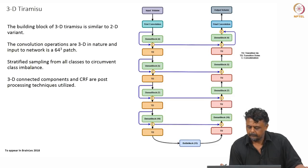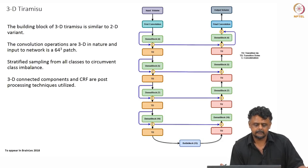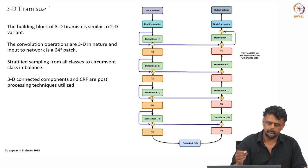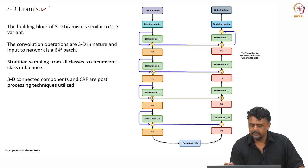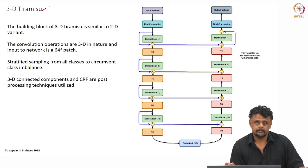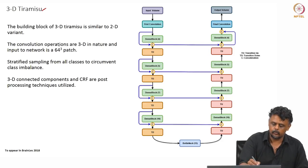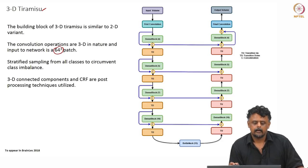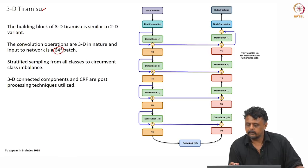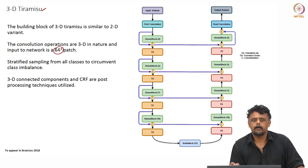A variation of this is the 3D Tiramisu network. The building blocks are very similar to the 2D variant; however, the patches are 3D. Instead of using an entire 2D slice as input, you take 64-cube patches as input and try to predict all of them in one pass through the network.